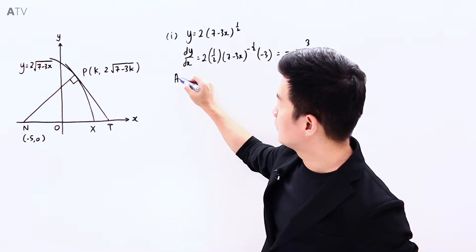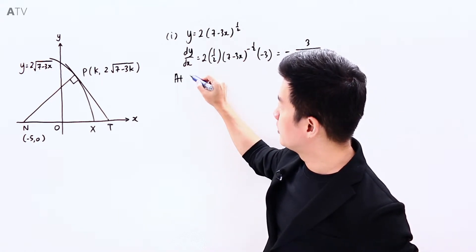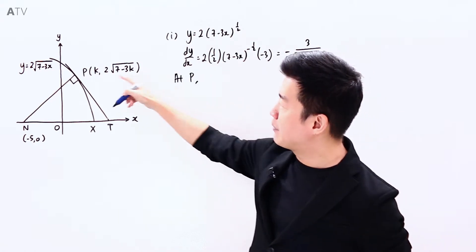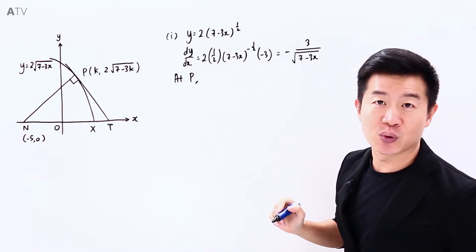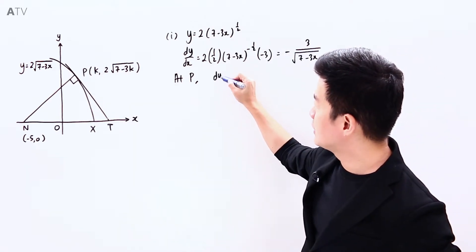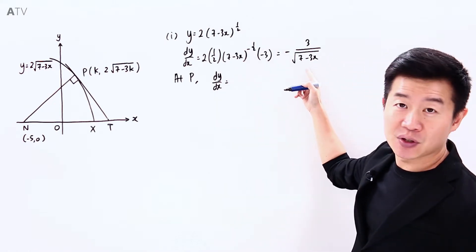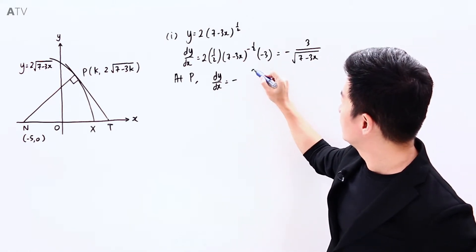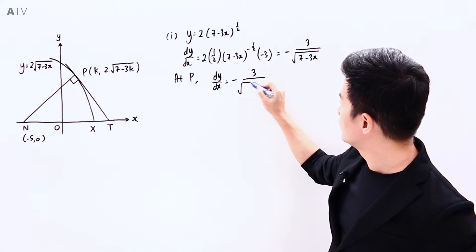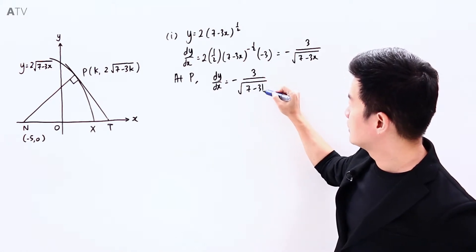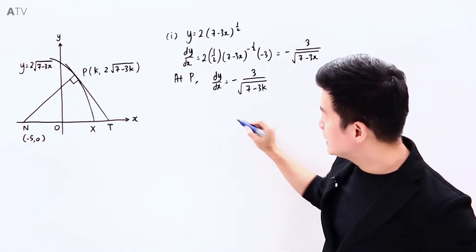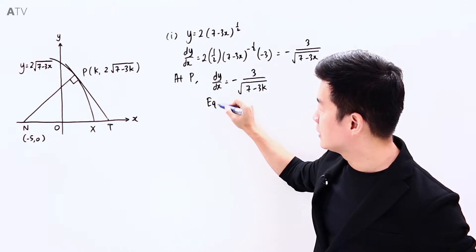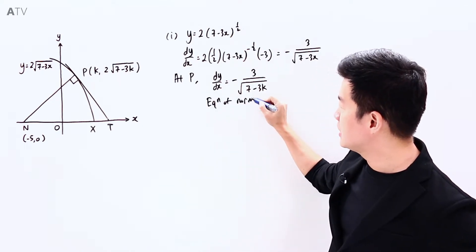And then we can find the equation of the normal at point P. At point P, x is equal to k, which means that dy/dx is going to be negative 3 over square root of (7 minus 3k). Which means that we can then find the equation of the normal at point P.